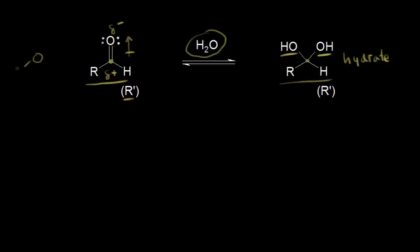Let's go ahead and draw the water molecule right here. Water can function as a nucleophile — it has two lone pairs of electrons. This oxygen is partially negative, and so we're going to get a nucleophile attacking our electrophile. A lone pair of electrons on the oxygen is going to attack our carbonyl carbon. The nucleophile attacks the electrophilic portion of the molecule, and these pi electrons kick off onto the oxygen.